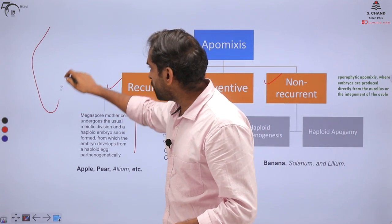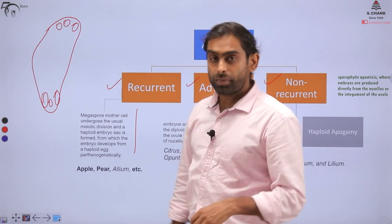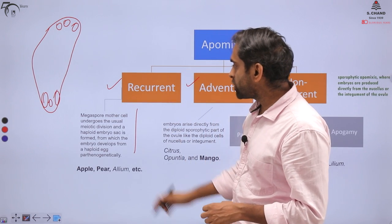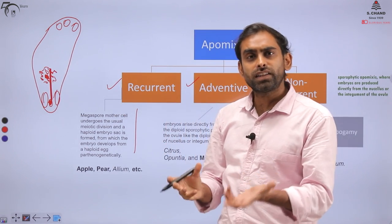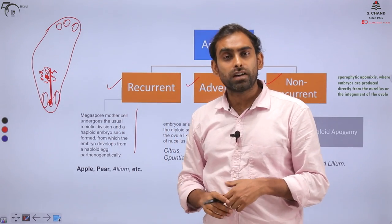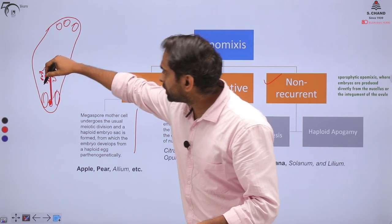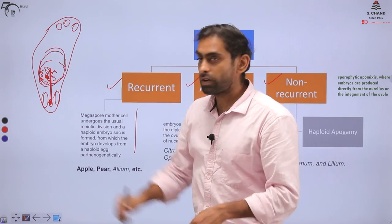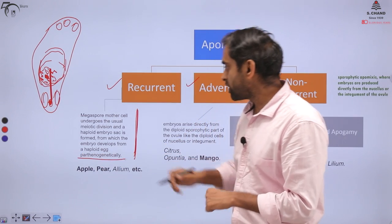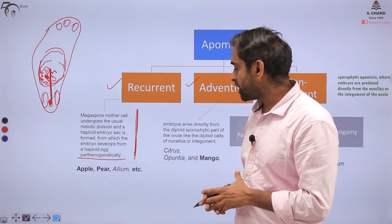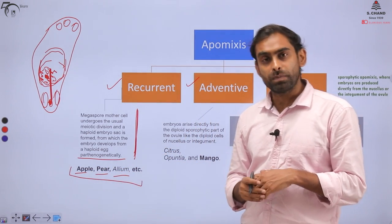In Recurrent Apomyxis, the Megaspore mother cell undergoes a usual mitotic division and a haploid embryo sac is formed, from which the embryo develops from a haploid egg parthenogenetically — without fertilization. The megaspore mother cell divides mitotically and receives certain morphogenic signals, causing it to develop into an embryo directly. So where the embryo should have been diploid after fertilization, here it will be haploid. This is seen in apple, pear, and Allium (onion and garlic).